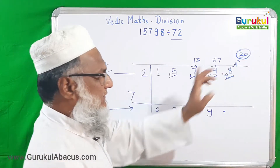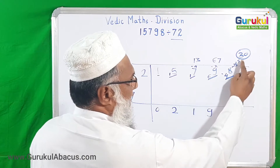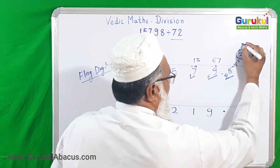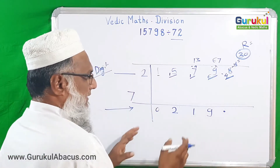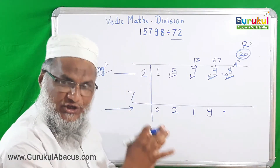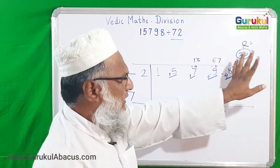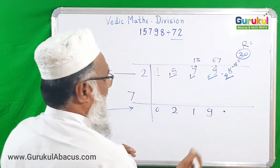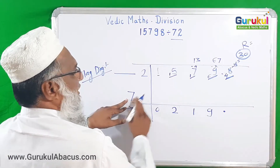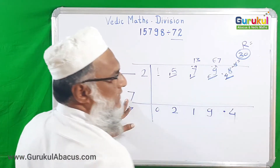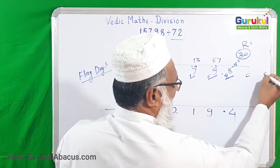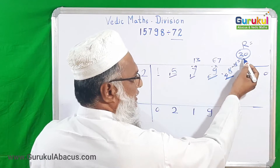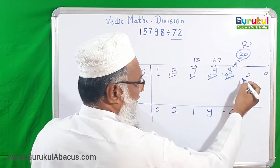I have circled 30 for understanding — after the decimal point, when we subtract the product, what we get is the remainder of the example. So in this example the quotient is 219 and the remainder is 30. But we are still operating with 30 to find the answer in decimal form. So 30 is there; 7 fours are 28, so we take 4.